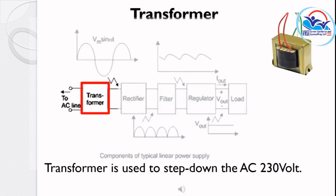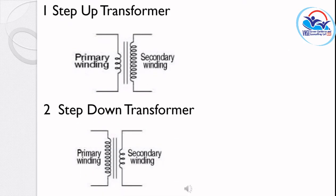To step down the mains supply of 230 volts into a lower AC voltage level, a transformer is used. In a step-down transformer, the primary winding has a greater number of turns.